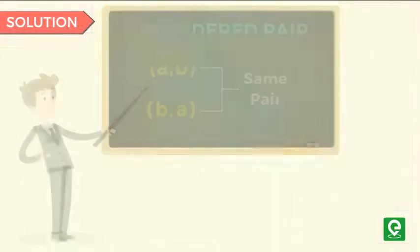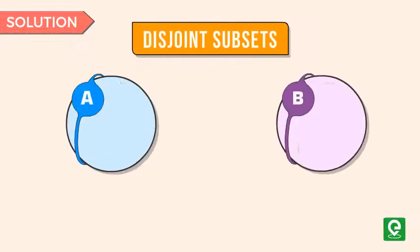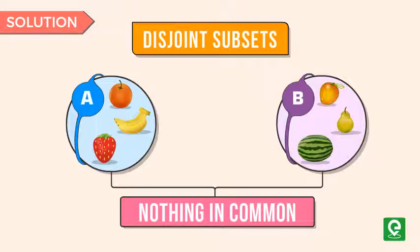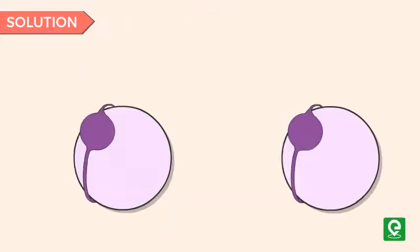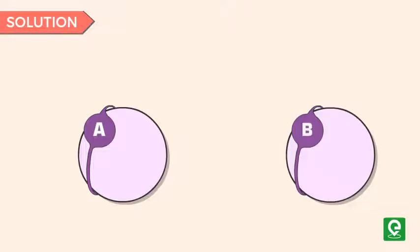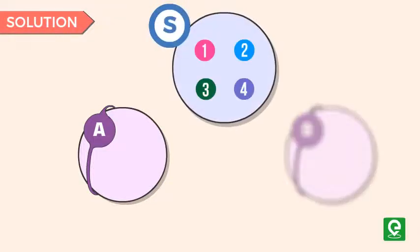Disjoint subsets are those which have no common elements. Now using these concepts, let's solve the given problem. Let's assume two sets A and B.